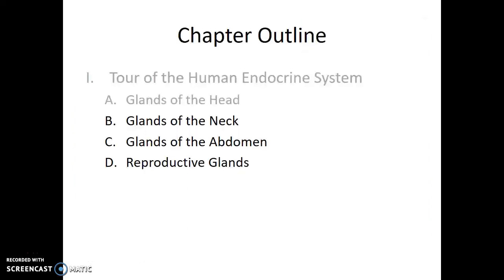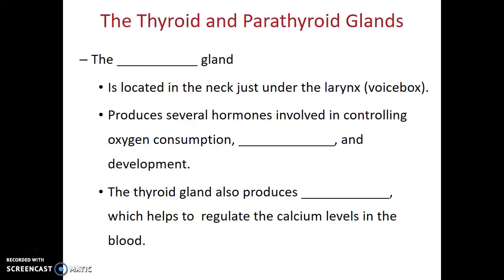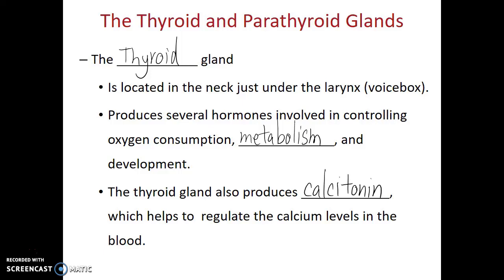The next stop on our tour of the endocrine system is the neck. In the neck we have our thyroid gland, located just under the larynx, or the voice box. The thyroid gland produces several hormones involved in controlling oxygen consumption, metabolism, and development. The thyroid gland also produces a hormone known as calcitonin, which helps regulate the calcium levels in the blood.